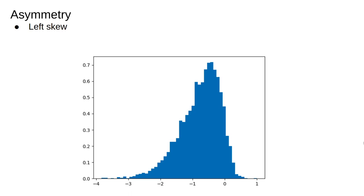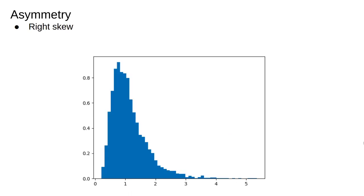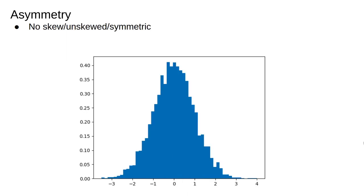This data has a left skew or a negative skew. All that means is that there are more values to the left of the peak than there are to the right. This distribution has a right or positive skew since there are more observations on the right. This distribution has no skew — that is, it's symmetric. The number of values to the left and the right of the peak are roughly equal.